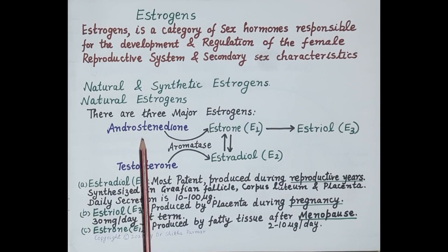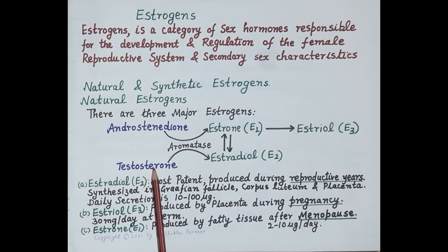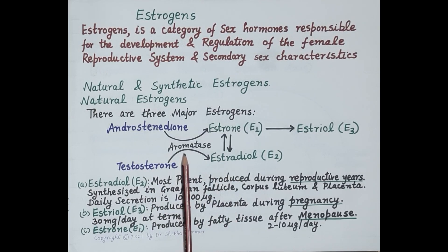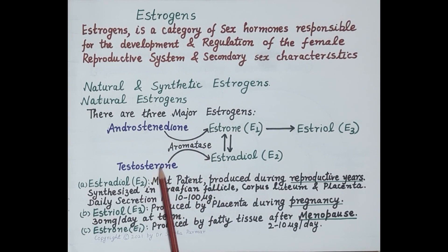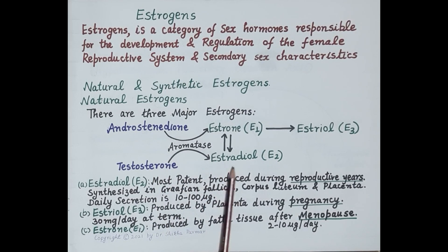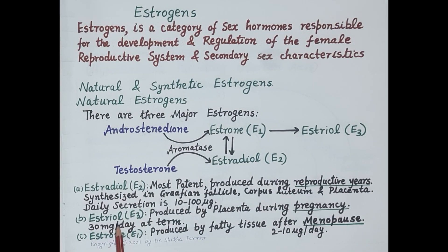The daily secretion of estradiol is 10 to 100 micrograms, depending upon the phase of the reproductive cycle. Androstenedione is a weak androgenic steroid and it is a precursor of estrone, while testosterone is the principal androgen in the body and it is a precursor of estradiol. The aromatase enzyme converts androstenedione to estrone and testosterone to estradiol.